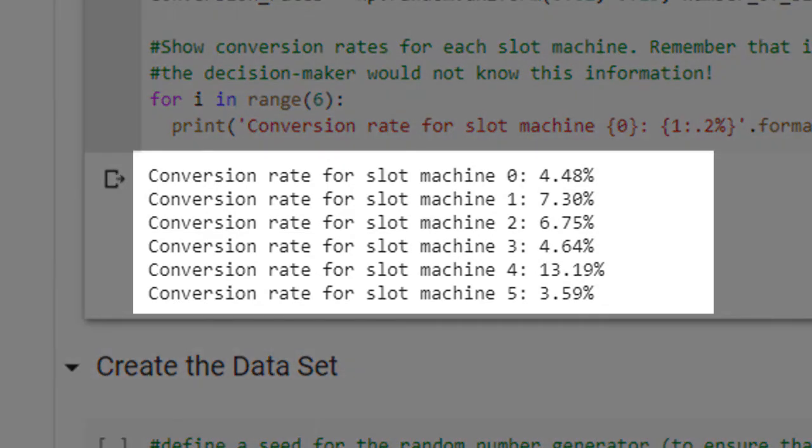As you can see, each slot machine has been assigned a different conversion rate, and machine 4 has the highest conversion rate. Remember that the conversion rate indicates how often a gambler will win if she plays that machine. The gambler, of course, would not know this information in advance. Only the casino would know this information.